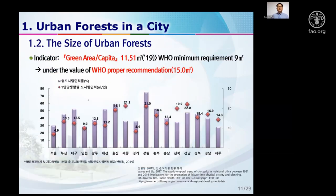In 2019, Korea's green area per capita was 11.5 square meters — above the minimum requirement of 9 square meters but below the proper recommendation of 15 square meters. I still do not know what is the data source behind these minimum and proper recommendation figures.